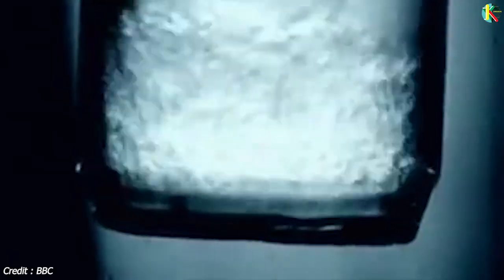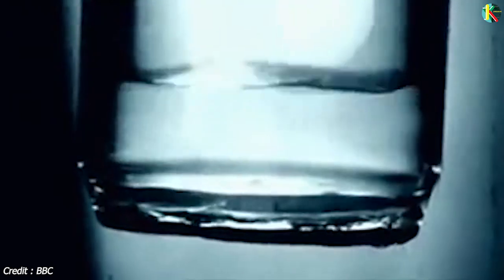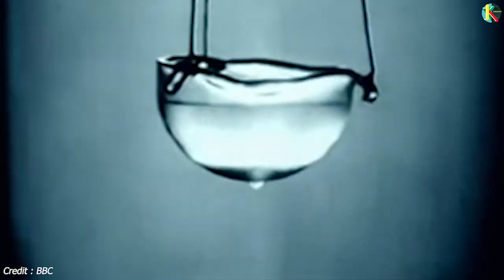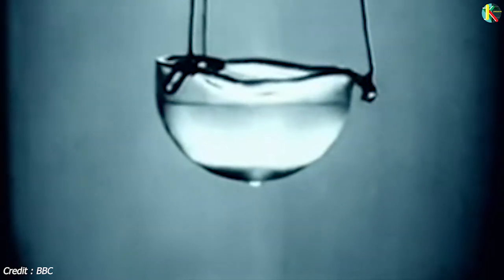Superfluidity occurs in two isotopes of helium when they are liquefied by cooling to cryogenic temperatures. The liquid helium in the superfluid phase shows some bizarre properties. It can climb up the inside wall of a container and down on the outside until the container is empty.